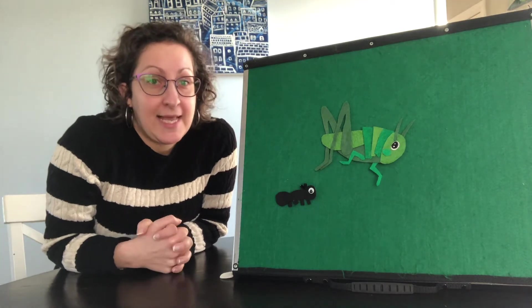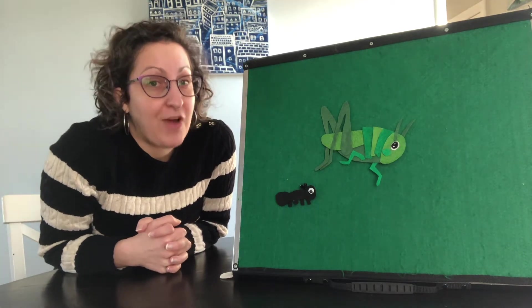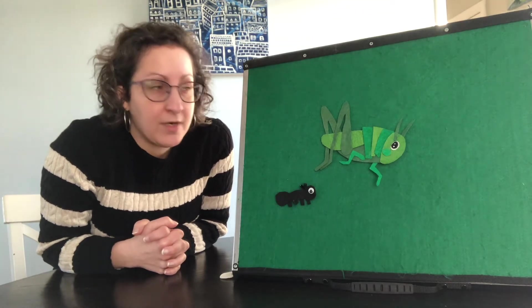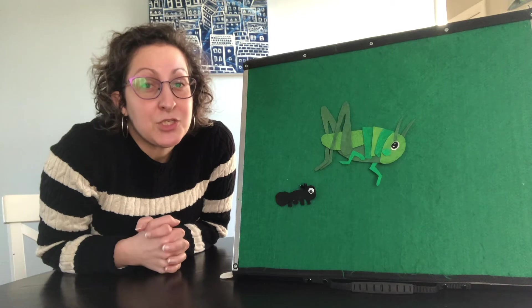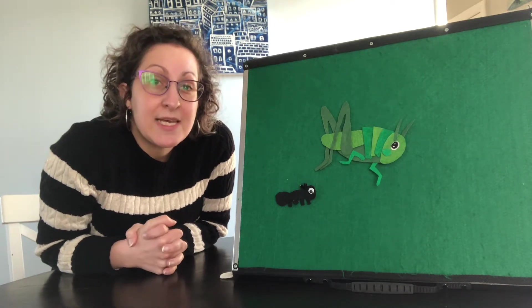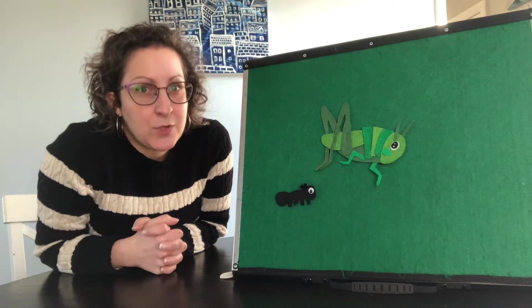So in this story the ant and the grasshopper are friends and all summer long the grasshopper would lay around in the sunshine and he would play music and he was really enjoying himself.